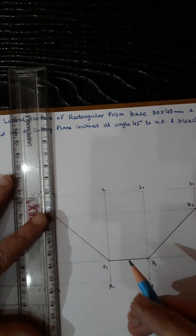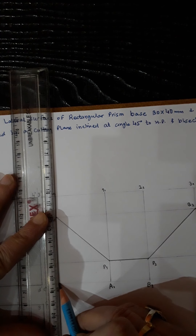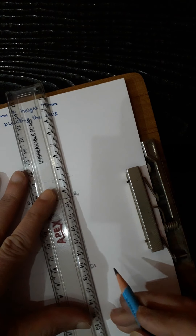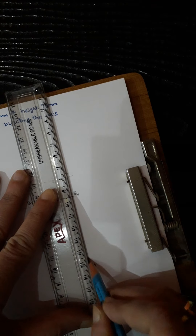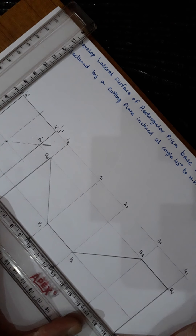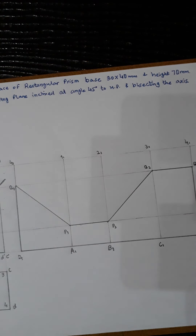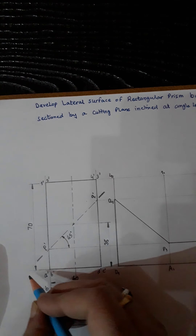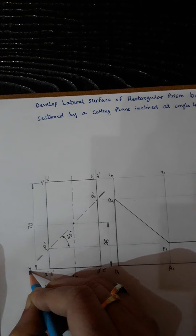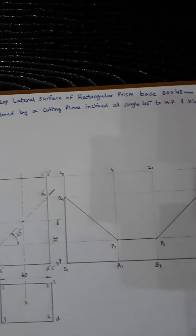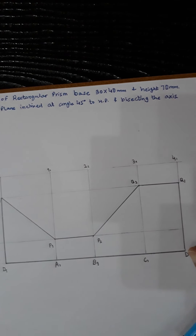Make the outside edges of the truncated prism development thick as well, including the base. Now this is complete. I will be doing the dimensioning — you can add X and Y reference lines as well. This is the completed development of this rectangular prism. I hope you got it, thank you very much.